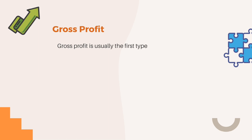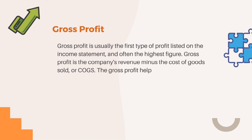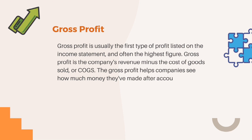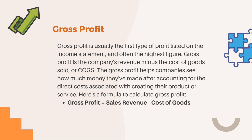Gross profit is usually the first type of profit listed on an income statement, and often the highest figure. Gross profit is the company's revenue minus the cost of goods sold. It helps companies see how much money they've made after accounting for the direct costs associated with creating their product or service. The formula to calculate gross profit is: Gross Profit = Sales Revenue − Cost of Goods Sold.